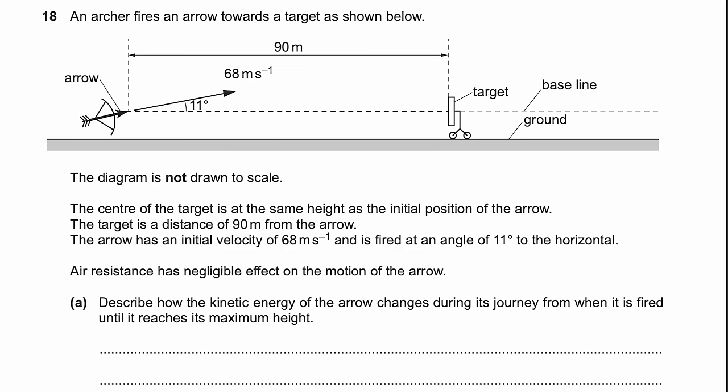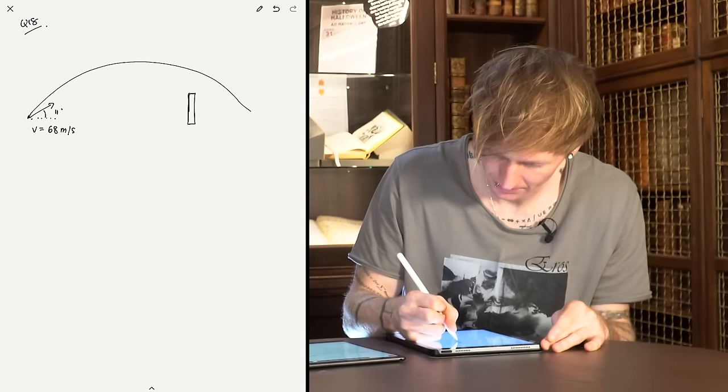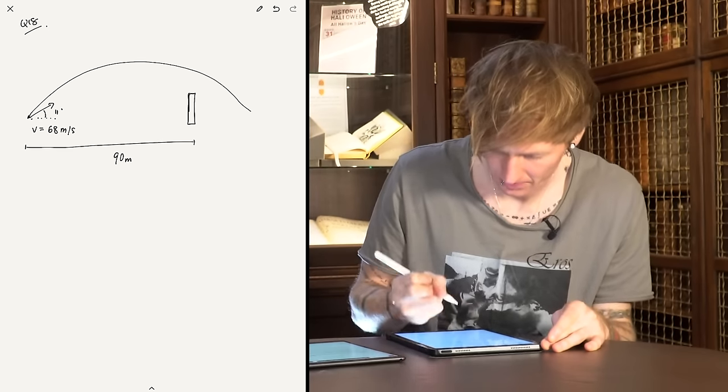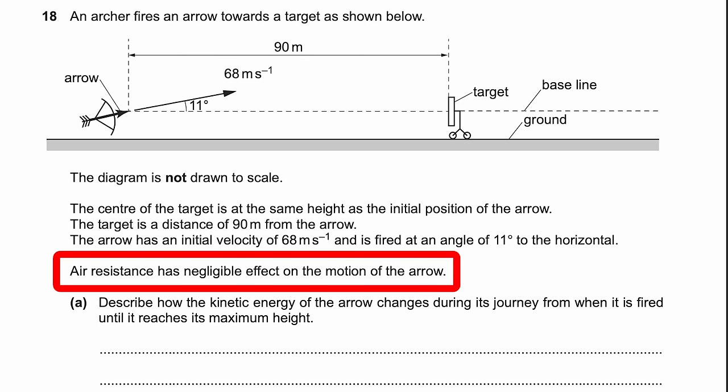The target is at the same height as it's launched from — that's quite important. Air resistance has negligible effect on the motion of the arrow — classic physics question, we're just going to ignore what happens in real life. This is an ideal problem — projectile motion with no air resistance. The first part is not straight into the maths; it's about describing how the kinetic energy of the arrow changes during its journey from when it's fired until it reaches its maximum height.